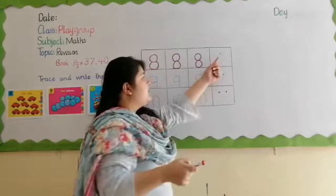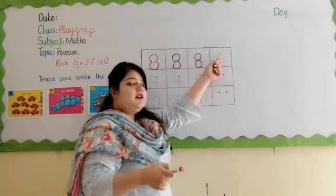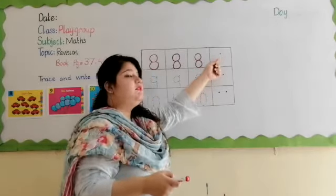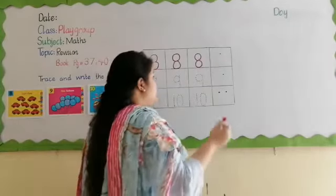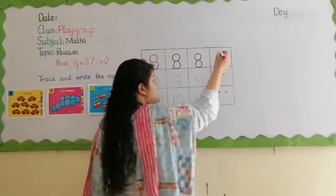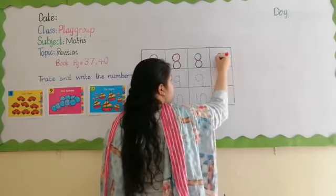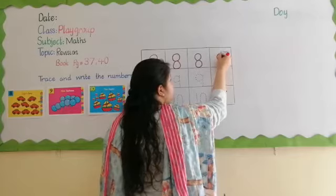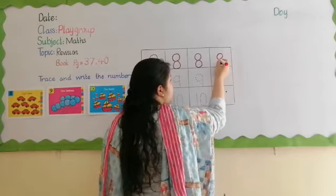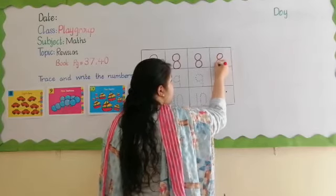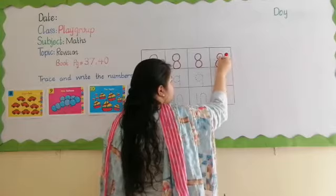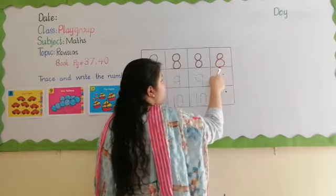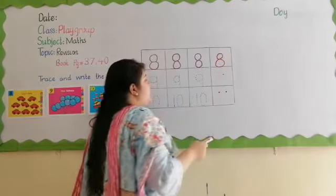Now in your books as well, we will write 8. Let's start. Go round and round — 8. Very good.